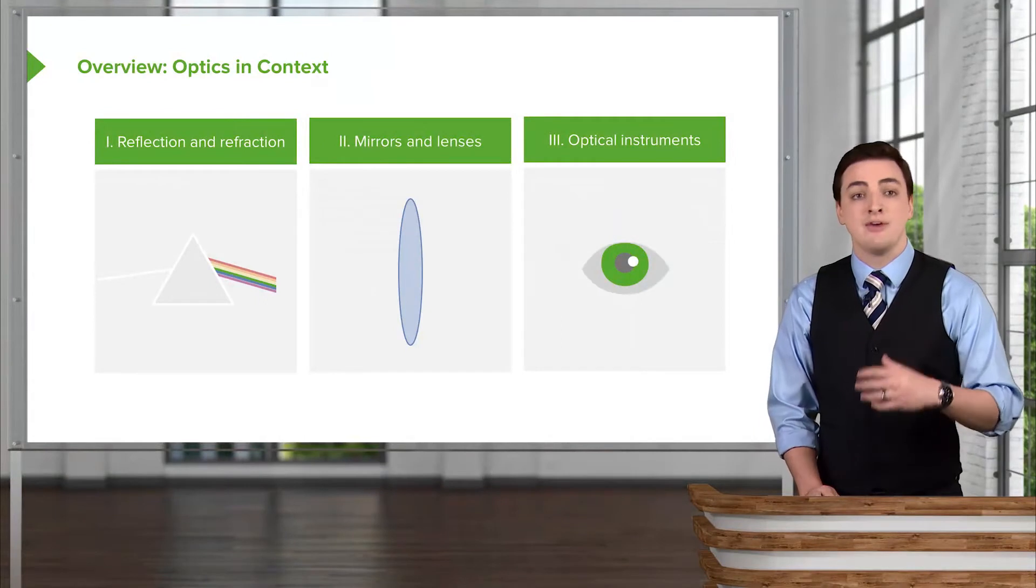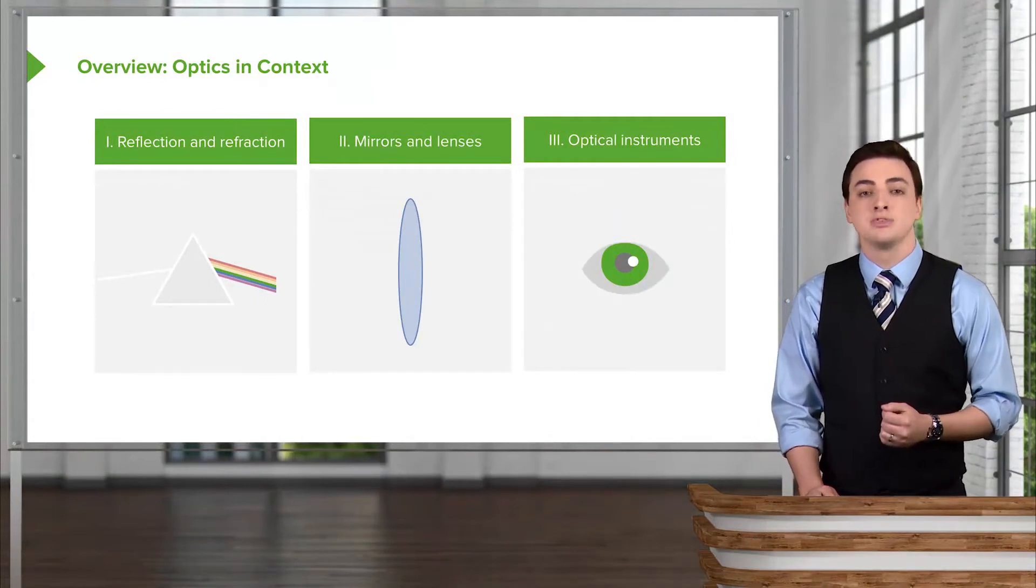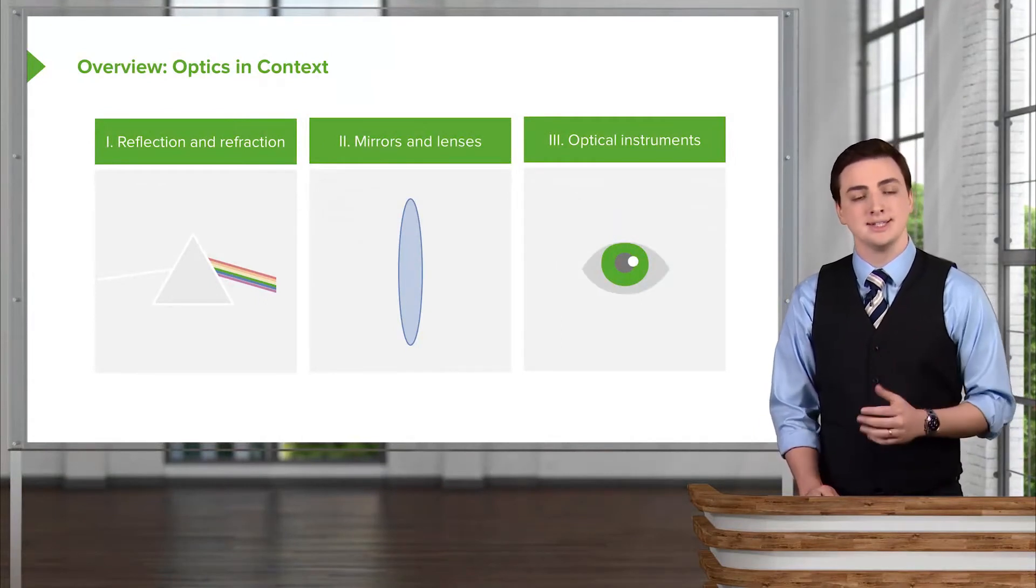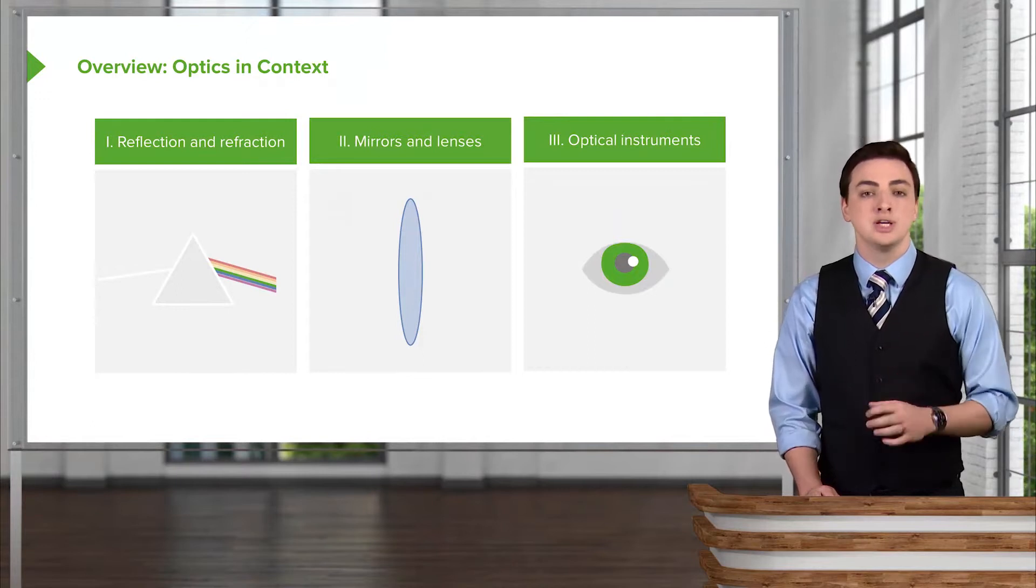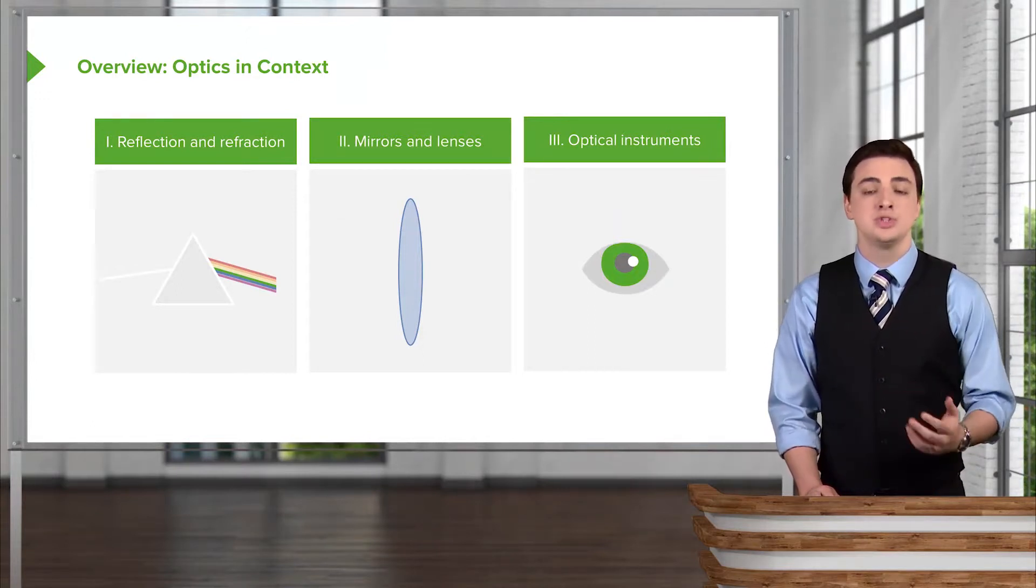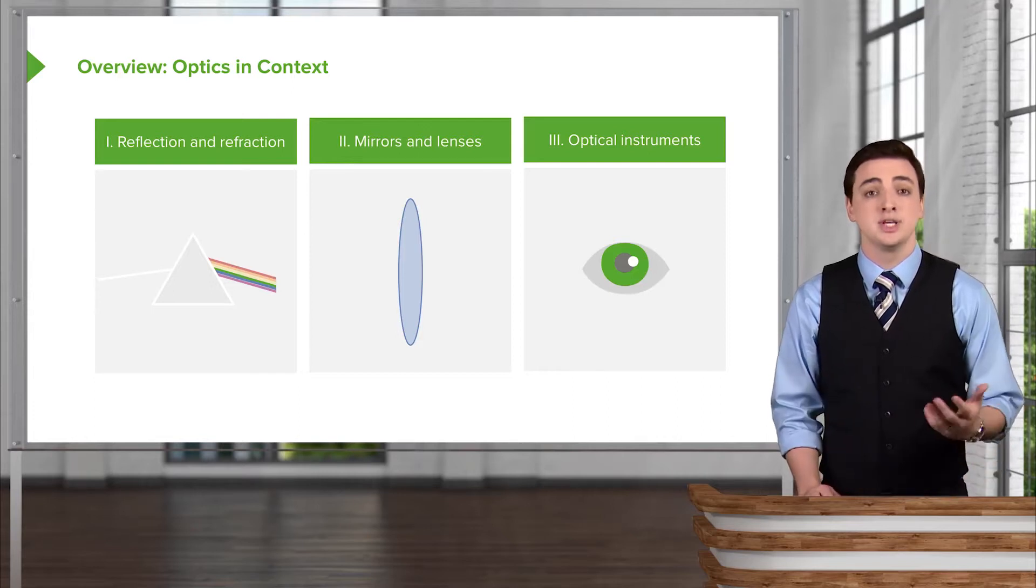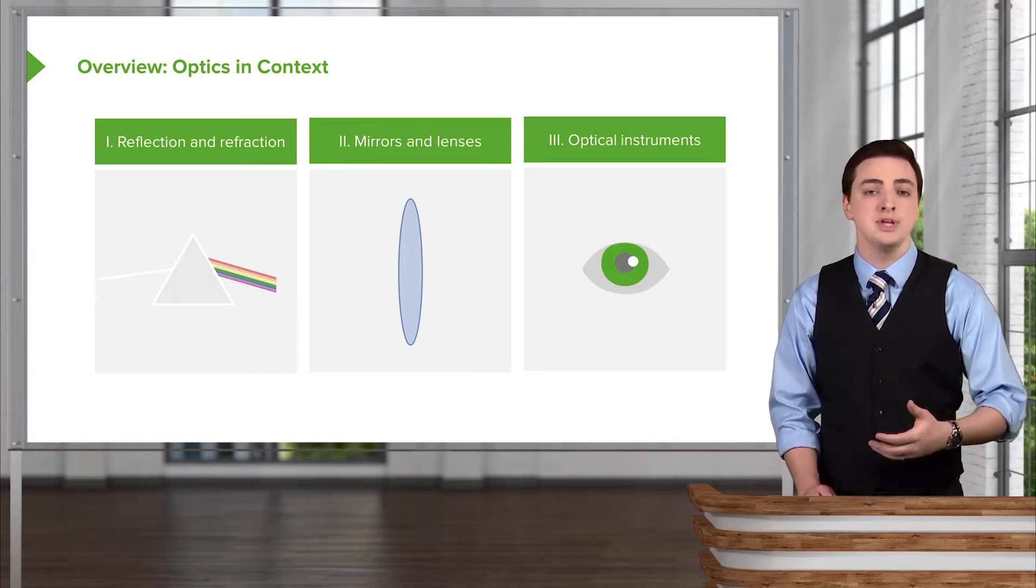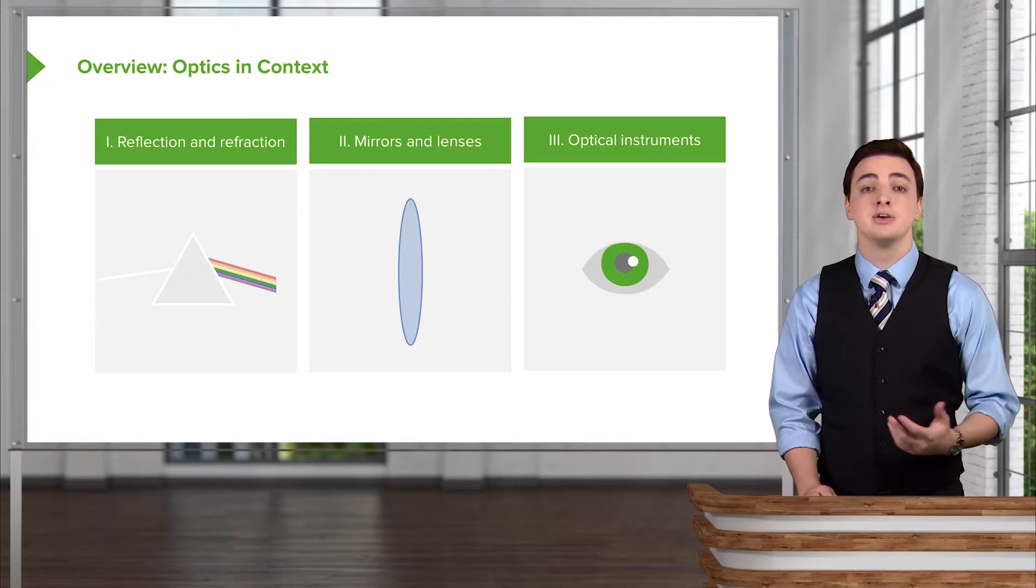In the overall topic of optics, after reflection and refraction, we'll talk about mirrors and lenses, and then finally move to optical instruments and how they use the principles we'll discuss to do what they do—whether it's zooming into small things or looking at very big, very far away things.